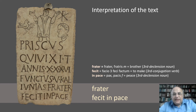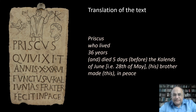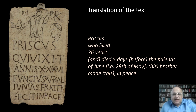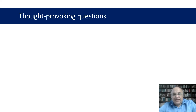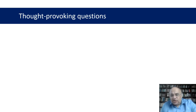The text closes with a benediction or, more simply, a farewell. In Pace can refer either to the deceased Priscus or to the reader of the epitaph. And now let's try to come up with a proper translation: 'Priscus, who lived 36 years and died five days before the Calendas of June, namely the 28th of May — his brother made this in peace.' Finally, I would like to ask you some thought-provoking questions, which will help you check what you learned and understood through this short presentation, and perhaps inspire you to deepen your knowledge in the field of Christian epigraphy.